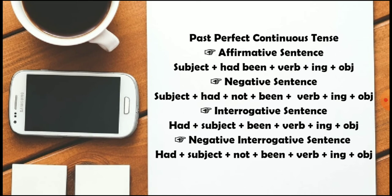For the interrogative sentence, we use the helping verb at the start: had he been playing football since morning? In the negative interrogative sentence, we use 'not' after the subject: had he not been playing football since morning? That was the negative interrogative sentence.